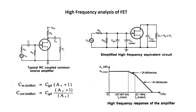The FET data sheet does not directly provide values of Cgs and Cgd. The data sheet normally provides values for input capacitance and the reverse transfer characteristics.